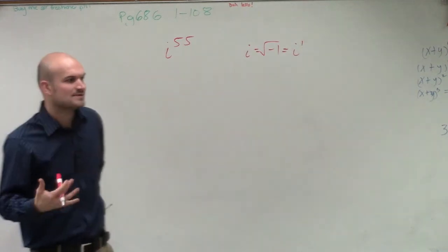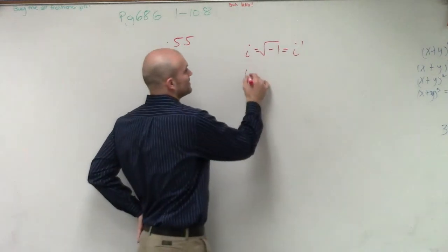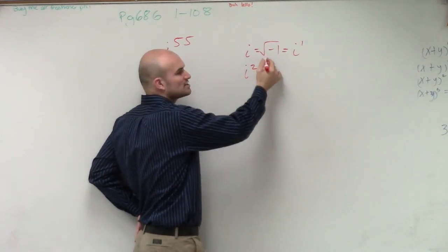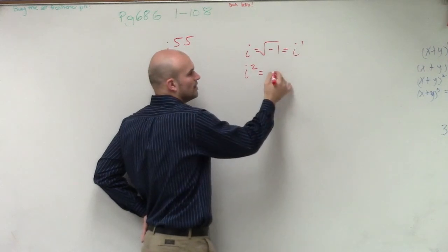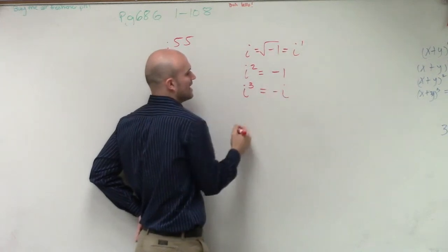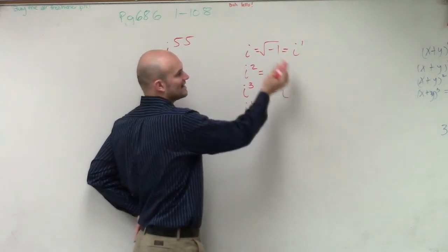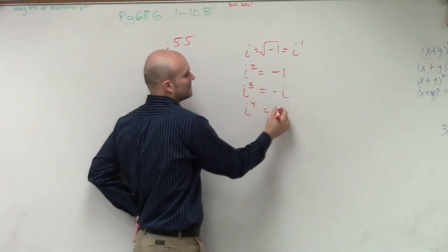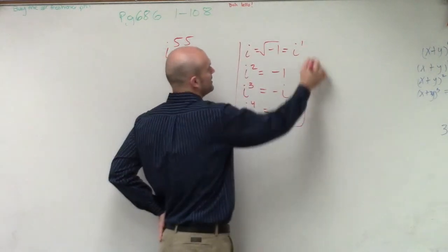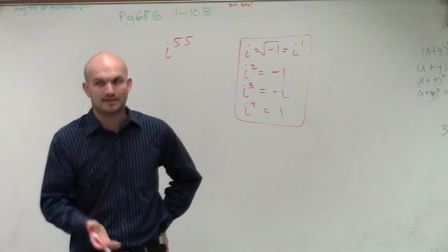And what we did is we kept on rewriting i times i times i times i. So then we end up getting i squared. Well, square root of negative 1 squared ends up equaling just negative 1. Then we multiplied by i again to give us i cubed, and that gives us negative i. Then we multiplied by i again, which would be negative i times i, which ended up giving us a positive 1. And what we found out was after we continued this pattern, the i's kept on repeating.